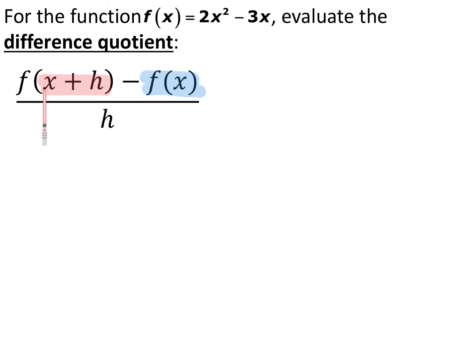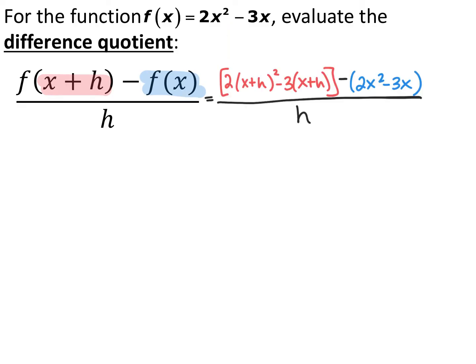The first part is f of x plus h. Every time I see an x in the original function, I replace it with the entire expression x plus h. Then I subtract the original function, and after all of that, divide by h. The most common mistake in this very first step is not replacing every x with x plus h, but rather just trying to add an h on the end. Make sure you replace every x in the original function with x plus h.